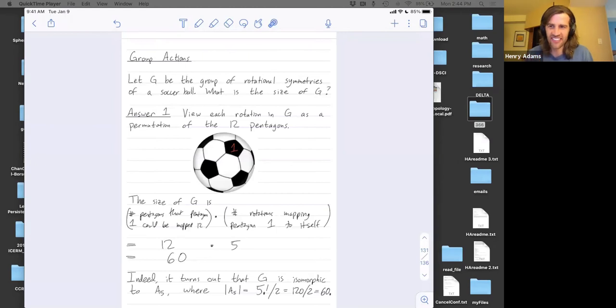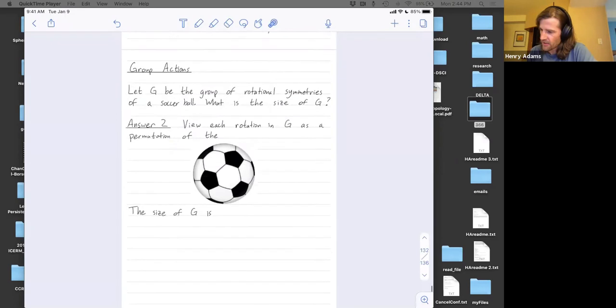I'm going to get the wrong answer intentionally at first, and you have to figure out where I made a mistake. So answer two, let G be the group of rotational symmetries of soccer ball. What's the size of this group? Instead, let's view each rotation as a permutation of the 20 hexagons. So there are 20 different hexagons on a soccer ball. Here I've drawn just hexagon one. But in total, you have 20 of these hexagons.